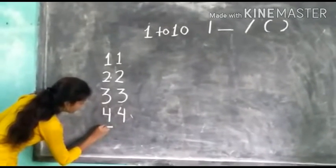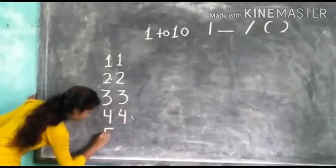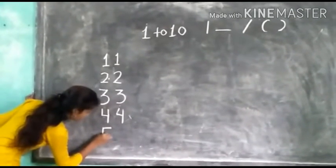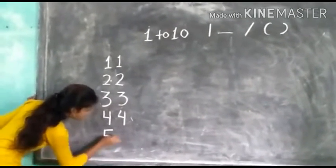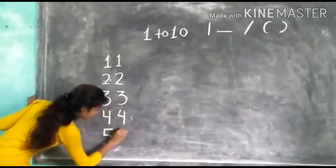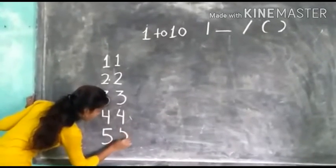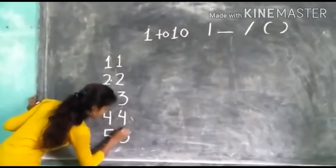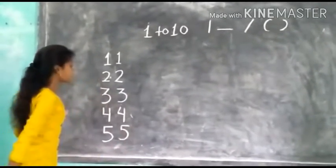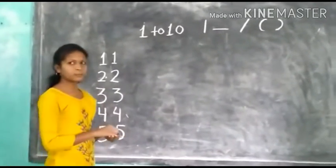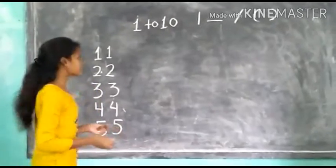Next number is 5. Sleeping line, standing line, curved. This is number 5.